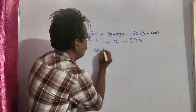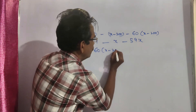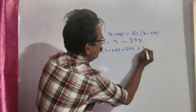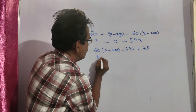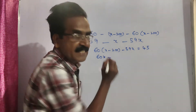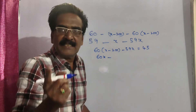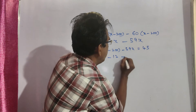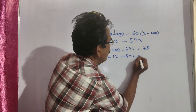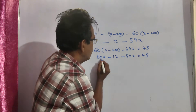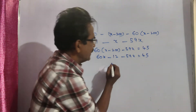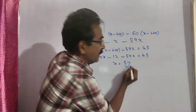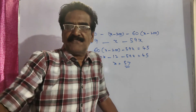So, 60x minus 60 times 200, which is 12,000 grams or 12 kgs, minus 59x equals 45. Therefore 60x minus 59x equals 45 plus 12, giving x equals 57. So 57 kgs is your answer, friends.